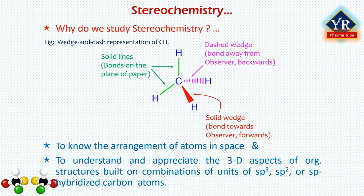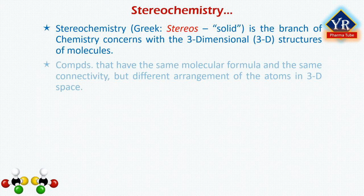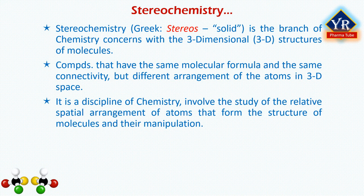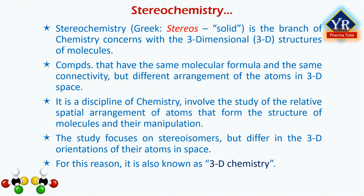The term stereochemistry — stereos meaning solid — refers to the branch of chemistry concerned with the three-dimensional structure of molecules. These molecules normally have the same molecular formula and the same connectivity, but different arrangement of atoms in 3D space. It is a discipline of chemistry involving the study of the relative spatial arrangement of atoms that form the structure of molecules and their manipulation. This study also focuses on stereoisomers, which by definition have the same molecular formula and sequence of bonded atoms but differ in the 3D orientations of their atoms in space. For this reason, it is also known as 3D chemistry.